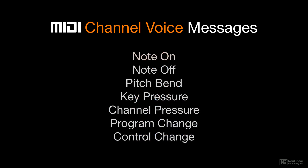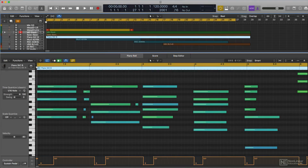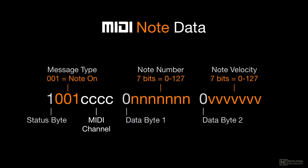Note on and note off are two different messages, even though they're obviously both required for each MIDI note. Although DAW MIDI editors incorporate both into each note in the various editing displays, for live MIDI transmission there's no way to know when the player will release a note, so MIDI note data can't simply specify duration. MIDI note data includes the specific pitch, or note number, of each note, keeping the note on and note off messages that reference a particular note together.